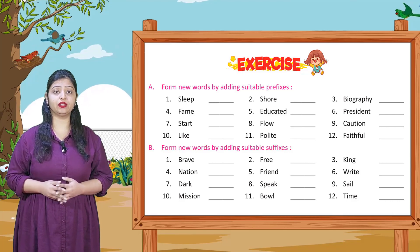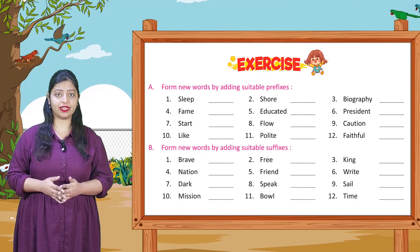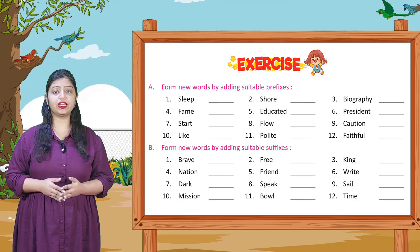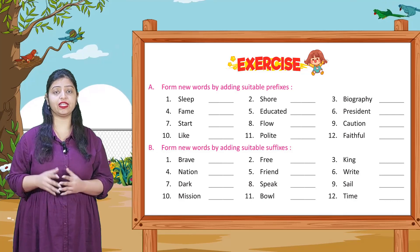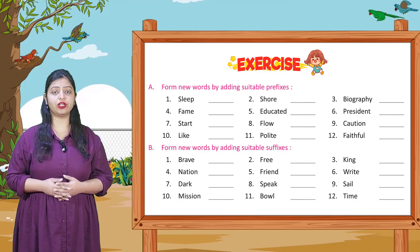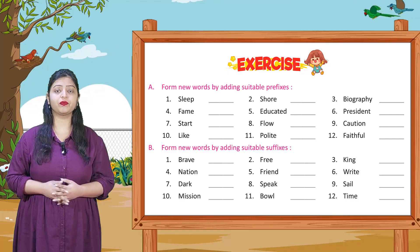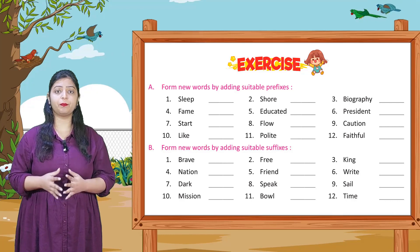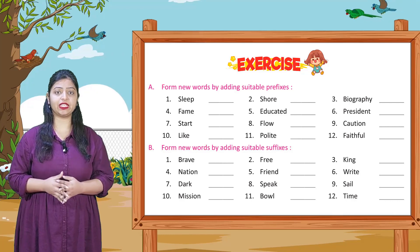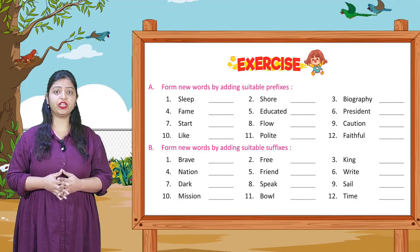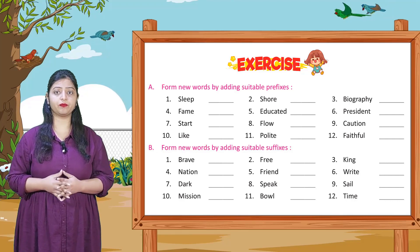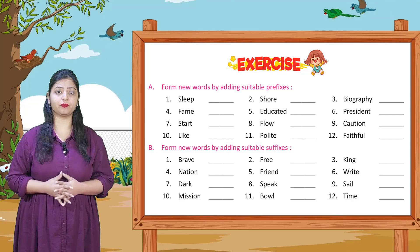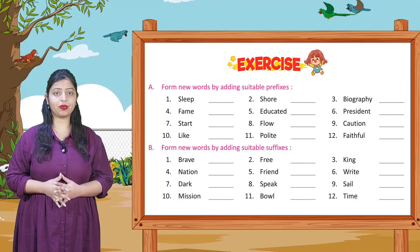Section B: Form new words by adding suitable suffixes. Aapko kuch words diye gaye hain jinmein aapko suffixes add karna hai, yaani ki words ke baad mein jo lagte hain. Pehla: brave + ly = bravely, free + dom = freedom, king + dom = kingdom. Isi tarike se baaki aap apne aap complete karenge.